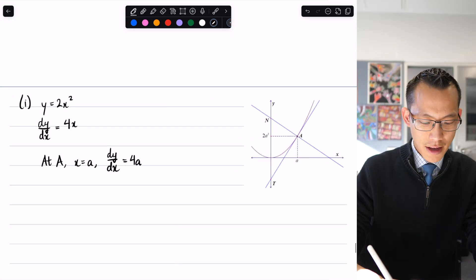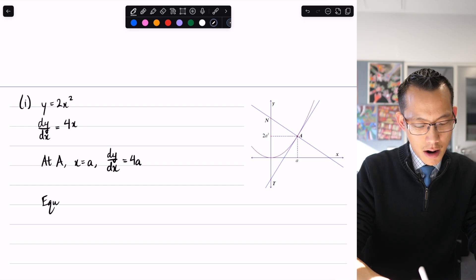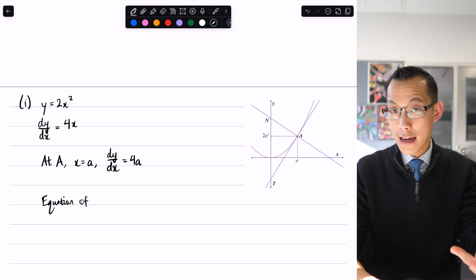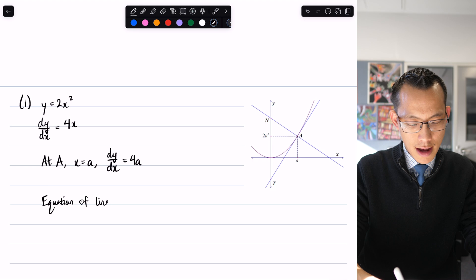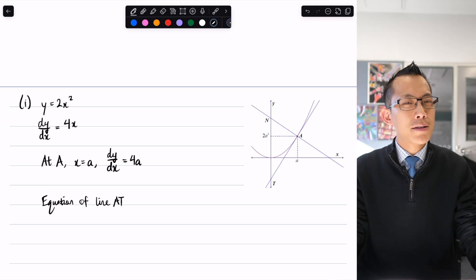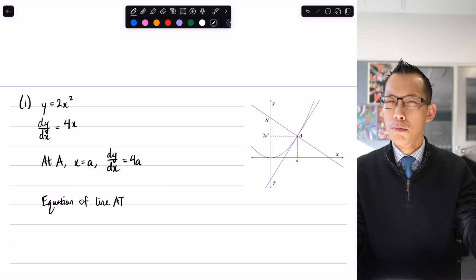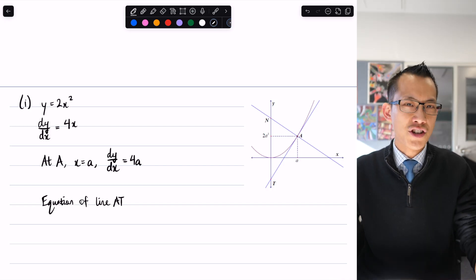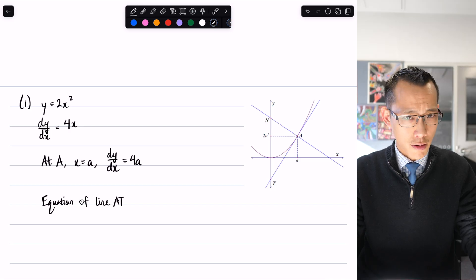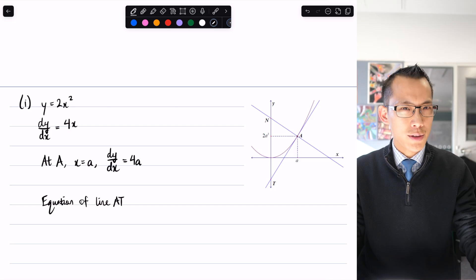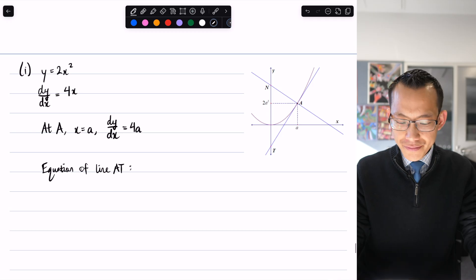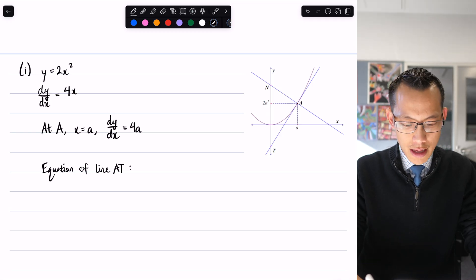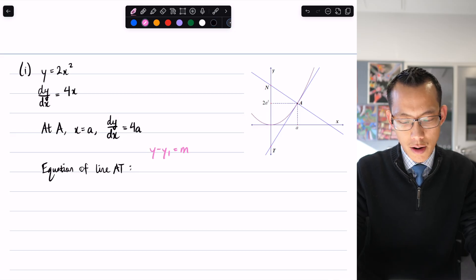The tangent goes through point A with coordinates (a, 2a²). I've got point-gradient form. I'll call this equation line AT because sometimes there's more than one tangent. We want to be as clear and unambiguous as possible. I'll use y - y₁ = m(x - x₁).